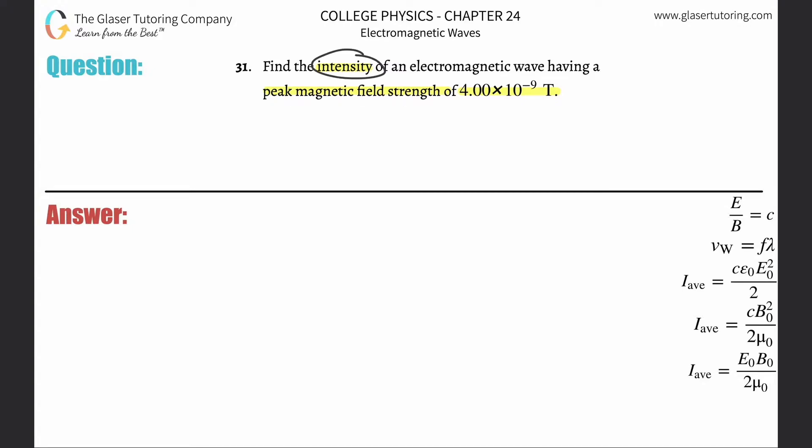Now it turns out we're going to be calculating average intensity. They don't indicate whether they want average or peak, so we're just going to calculate the average. We're going to need the formula over here on the right-hand side.